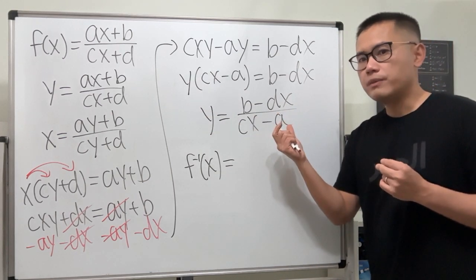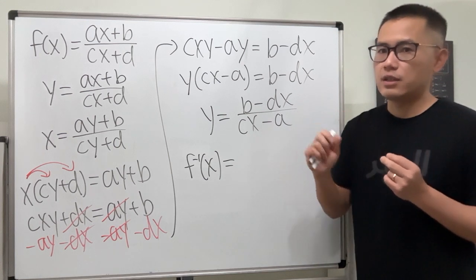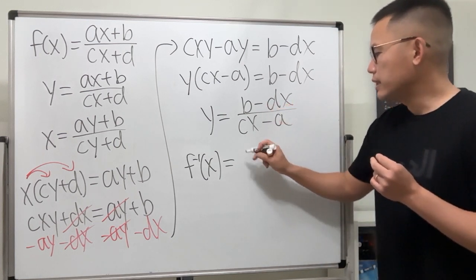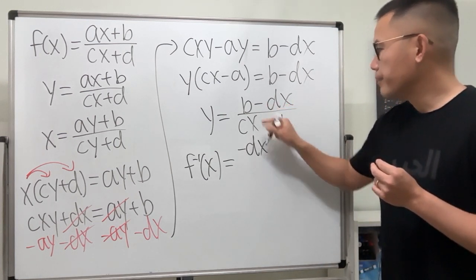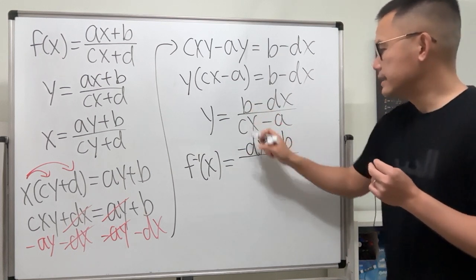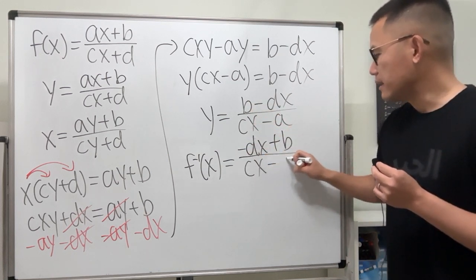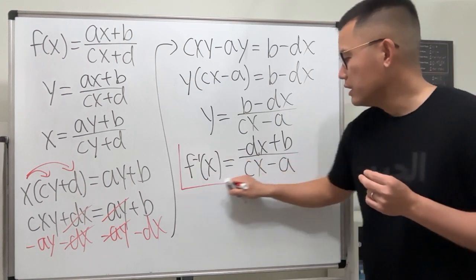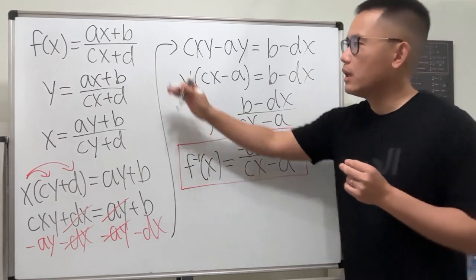Right here, let's change the order, because usually we like to have the x term goes first. So we write this as negative dx plus b over cx minus a. And this right here, it's the general form for the inverse of that function.